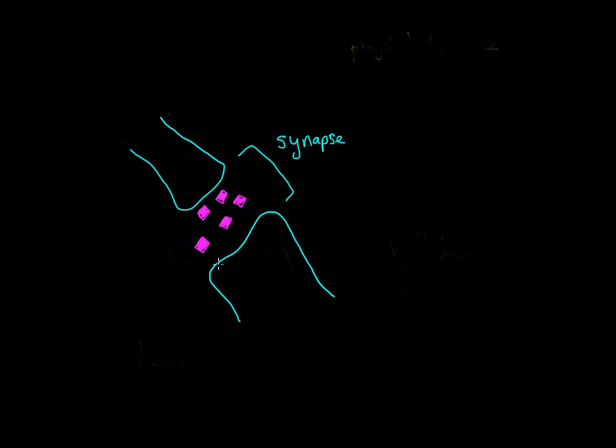And what normally happens here is that the postsynaptic neuron has receptors for certain neurotransmitters such as dopamine. It has these little spots for the dopamine to come and it gets taken up and it sends the signal on, and that's how you experience the euphoria. It's that stimulation of the neurons along that pathway.